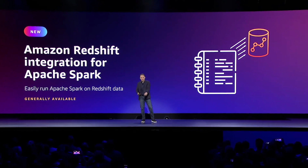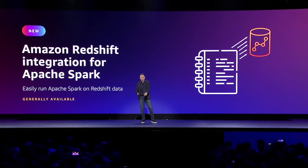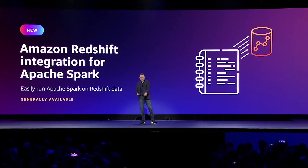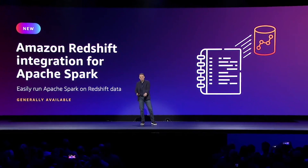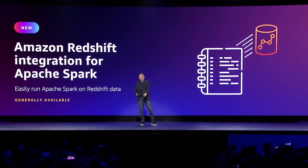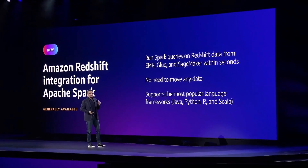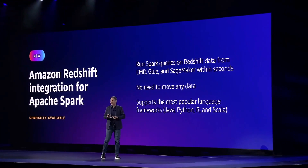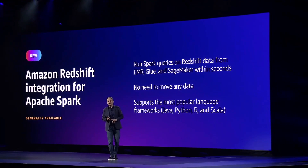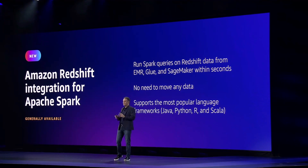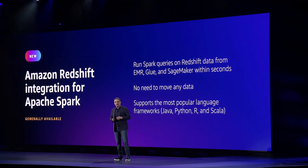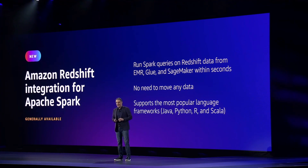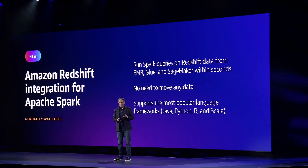The second integration announcement was also related to Amazon Redshift: the Amazon Redshift integration for Apache Spark. This allows users to run read-write queries directly on the data right in Redshift using EMR, Glue, or SageMaker. The problem this solves is not having to move your entire dataset into Spark or manage custom connectors to achieve this.